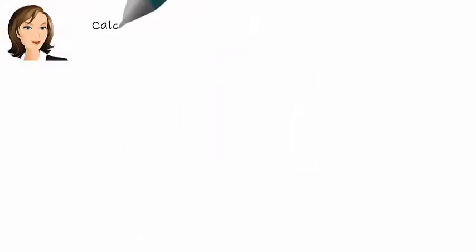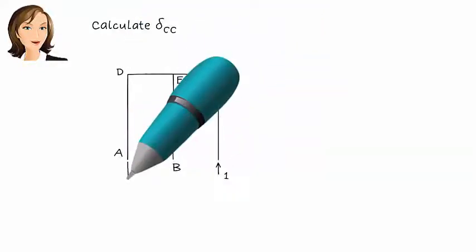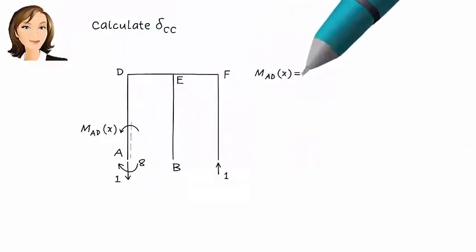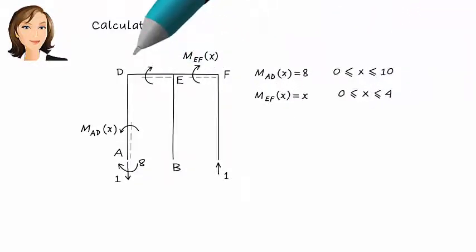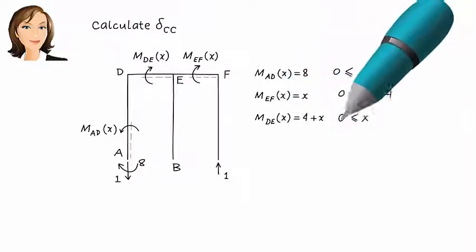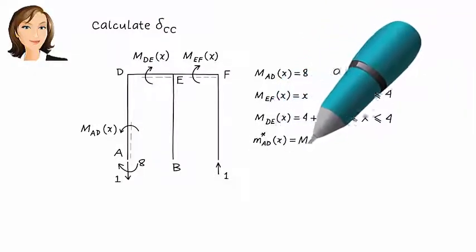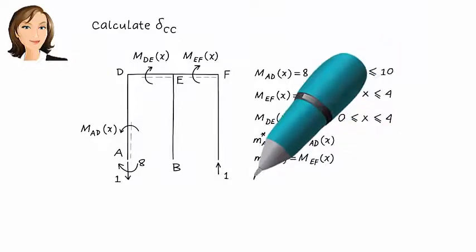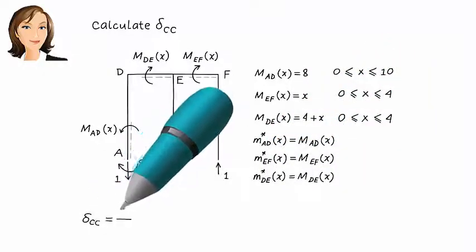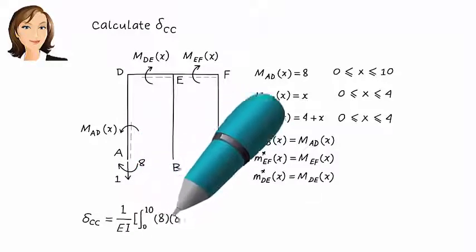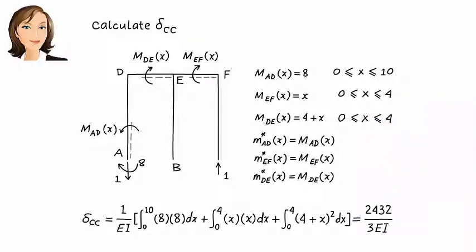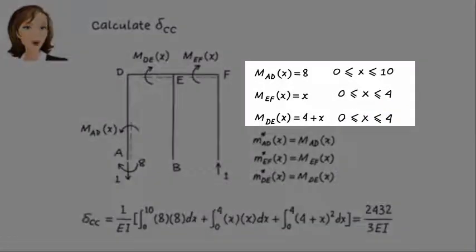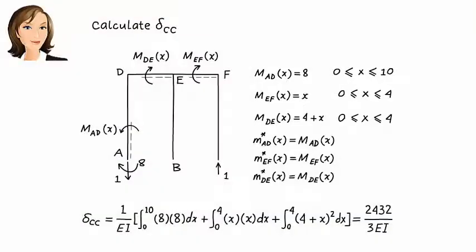Delta CC — the vertical displacement at C due to a unit load placed at C — can be calculated in the same manner. Here we have three members carrying a non-zero bending moment. The bending moment in BE and CF is zero.